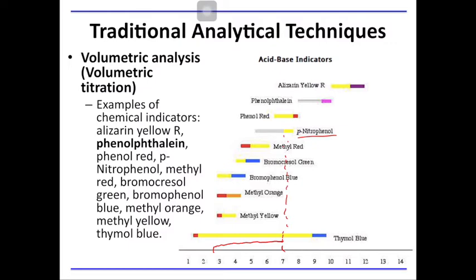It is the indicator that determines when the reaction is completed. The indicator paranitrophenol changes color from colorless to yellow at around pH 7. And when it changes color, you can know when the analyte fully reacts with your titrant. When your reaction exhibits changes at different pH, that is when you use other indicators. For example, we have methyl yellow, which changes from red to yellow at around pH 3.1. And bromcresol green, which changes from yellow to blue at around pH 4.7.